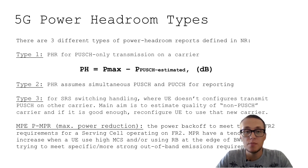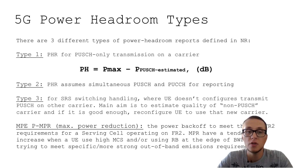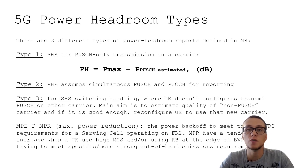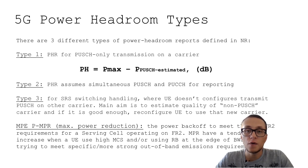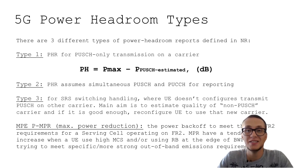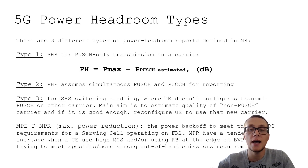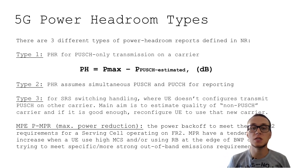Now let's look at power headroom report types. Type 1 is power headroom for PUSCH — this is the classical and most common type. Type 2 assumes transmission not only for PUSCH but also for the PUCCH channel. Type 3 is for SRS switching — the main purpose is to calculate the quality of a non-PUSCH carrier, and if that quality is good enough, to reconfigure the UE to use that new carrier as the PUSCH carrier.